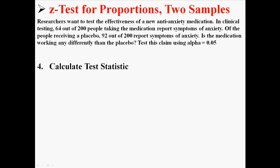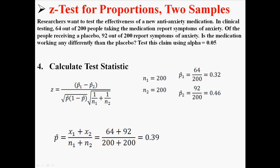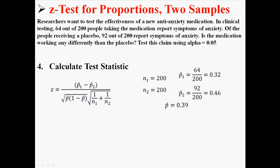Now actually calculating the test statistic. This is the equation for calculating Z when testing for two proportions. We know that N1 and N2 are both 200, and we're dealing with 64 out of 200 and 92 out of 200. We just need to find the pooled proportion — we average those two proportions using this equation, and we find that P-hat is 0.39. Now we have all five pieces that go into the equation, and when we calculate Z, we get a Z of 2.869.